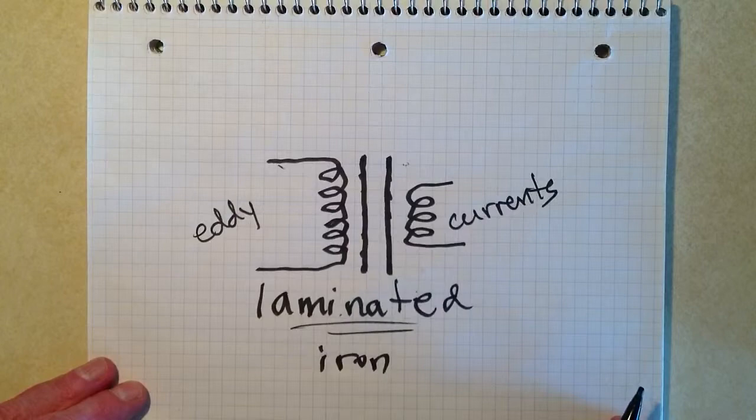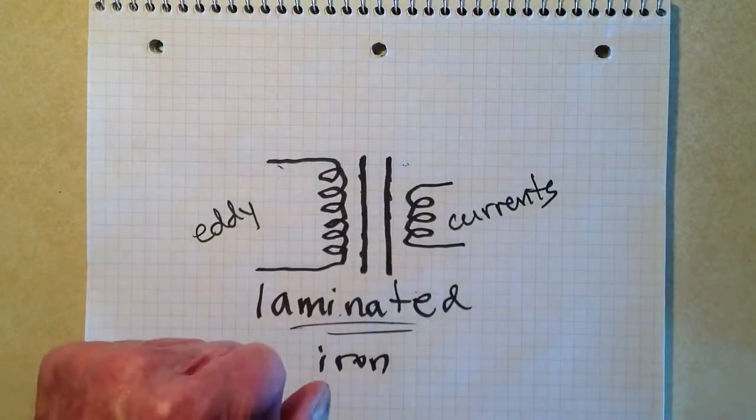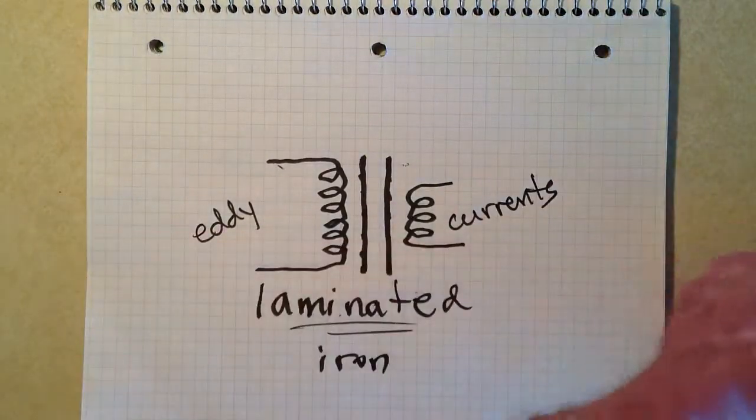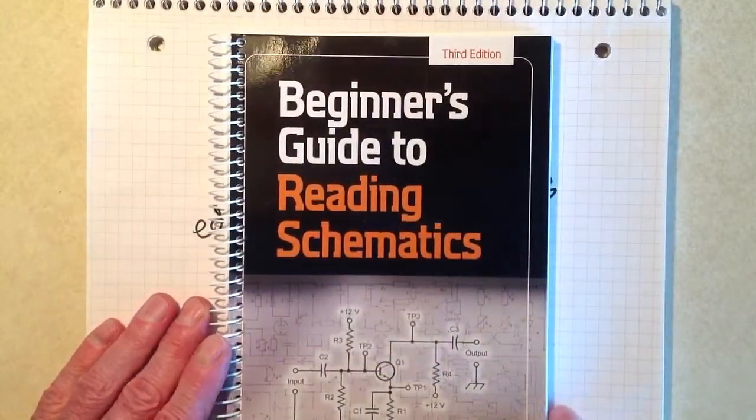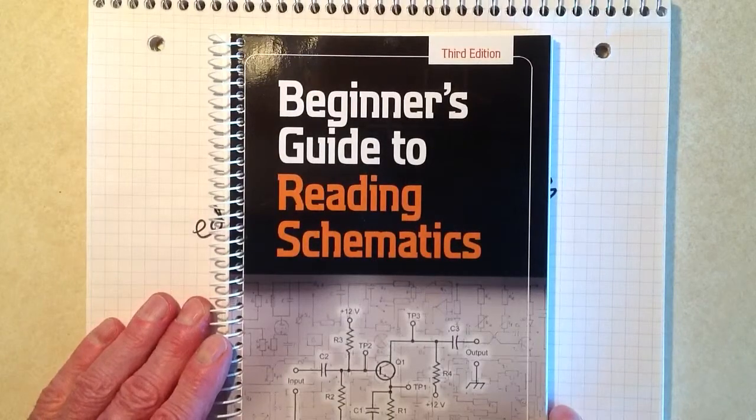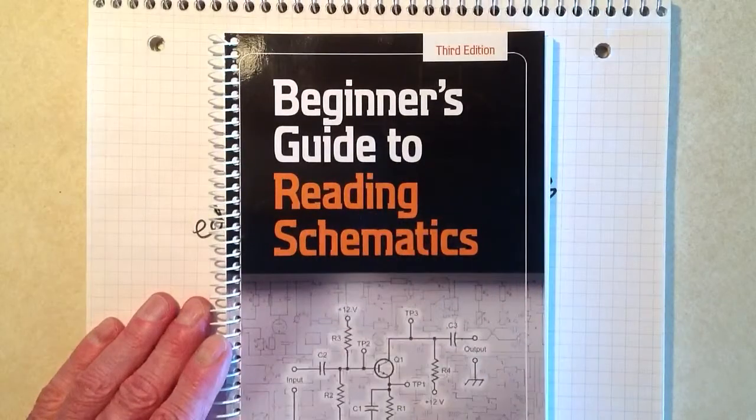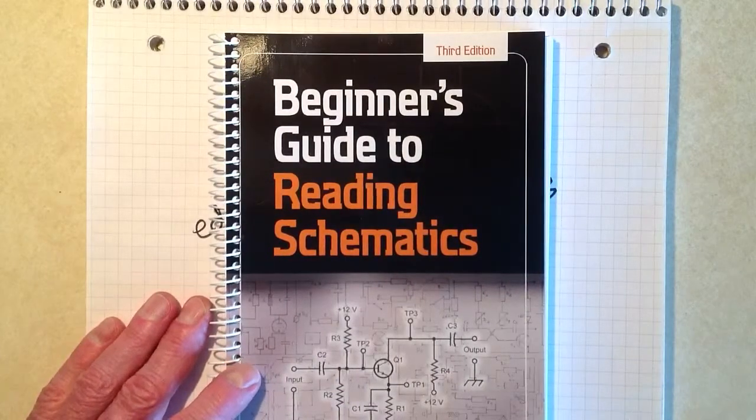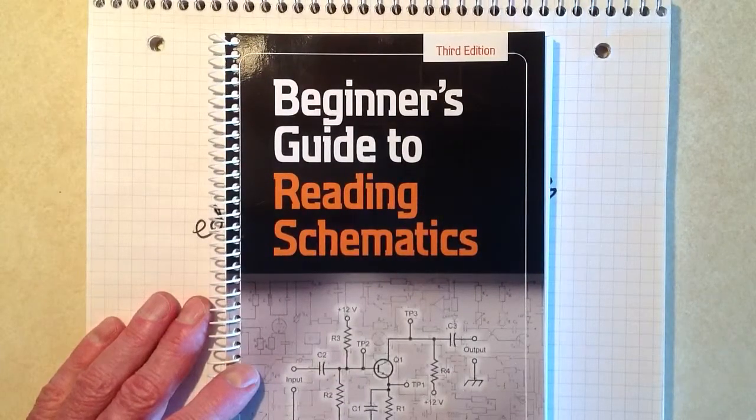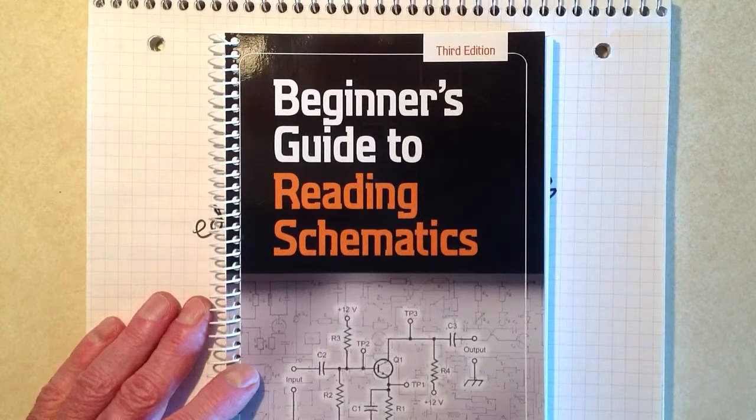In regards to the symbols for inductors and transformers, all of which you will find, and a great deal more in the book, Beginner's Guide to Reading Schematics and Drawing Them. Third edition, published by McGraw-Hill, October 2013, edited by yours truly, who will now sign off.